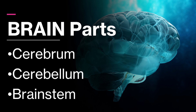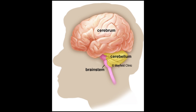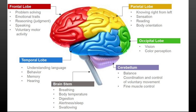Now, let's move on to the three main parts of the brain: the cerebrum, cerebellum, and brainstem. Each of these parts is essential for different functions. This illustration shows where the cerebrum, cerebellum, and brainstem are located, each playing a key role in controlling everything from movement to memory. The cerebrum is divided into four lobes: frontal, parietal, temporal, and occipital. The frontal lobe is responsible for decision-making and problem-solving, while the parietal lobe processes sensory information. The temporal lobe handles hearing and language, and the occipital lobe is responsible for vision.